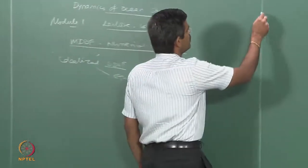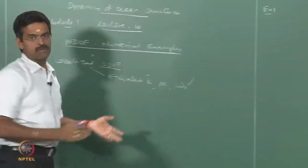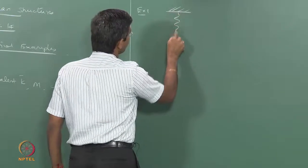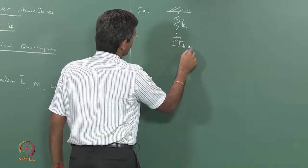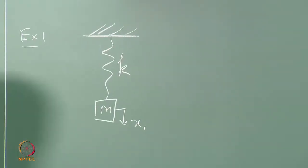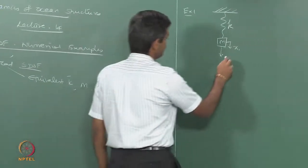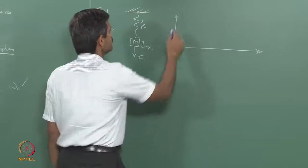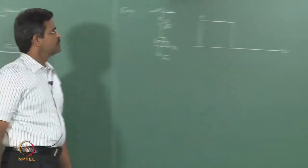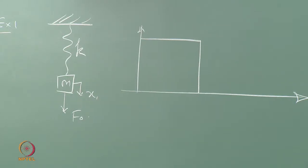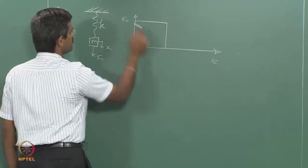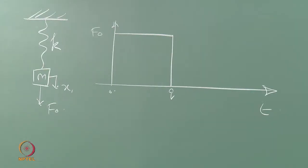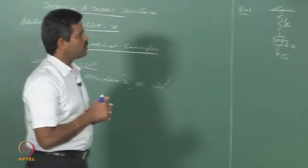We will take up another example now, where the problem is solved from first principles. Let us say I have a spring-mass system subjected to a load f-naught, and f-naught is an impulse function. The amplitude is f-naught from time 0 to q, and for t greater than q there is no load. So the load is acting only for a small duration from 0 to q; beyond q, for t greater than q, the load is zero.